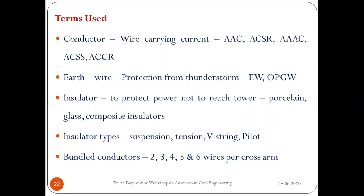Pilot insulators are used at large angle towers on the outer side of a turn to protect the jumper from touching the tower body. Depending on the number of conductors at each cross arm, configurations range from single conductor to double, triple, quad, penta, or hexa (up to six conductors), spaced using spacers.